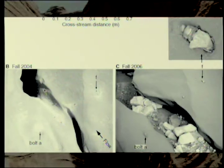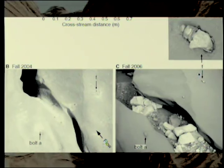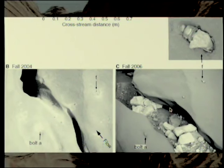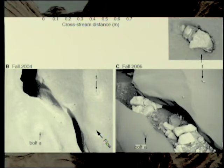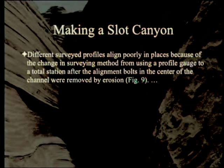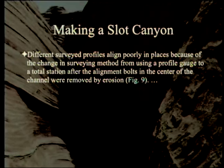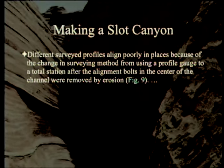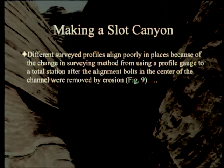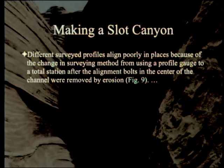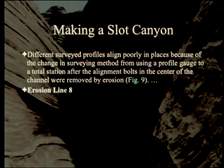In fall 2004 the channel was at one level; in spring it carved out this area; and somewhere in the middle — probably during the big flash flood — this got carved halfway out and bent by a huge amount of force. Surveyed profiles align poorly in places because of a change in surveying method from a profile gauge to a total station after the alignment bolts in the center of the channel were removed by erosion. Without the center points, they had to interpolate, reducing accuracy.